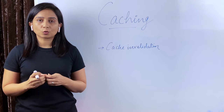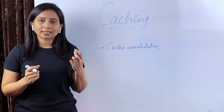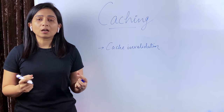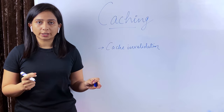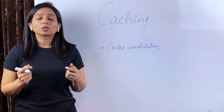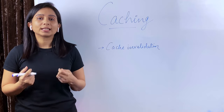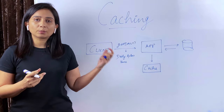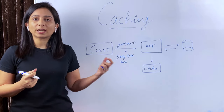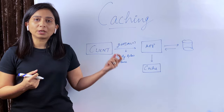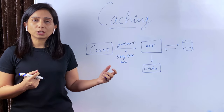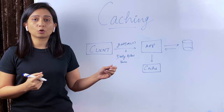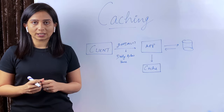One important thing to note is that data kept in cache is not there forever — it is volatile. That means the data has to be invalidated or removed from the cache at some point. So let's understand what cache invalidation is and why it is needed. Cache invalidation is needed because the data you're keeping in cache is going to change at some point, and when it changes you have to update the cache. The process of removing the old value or updating it with a new value is called cache invalidation.